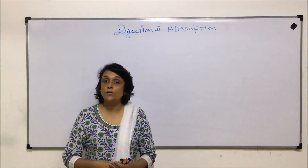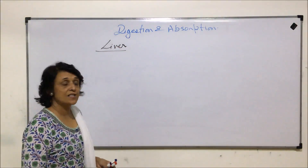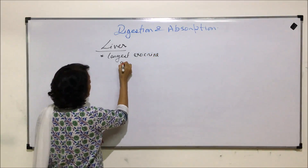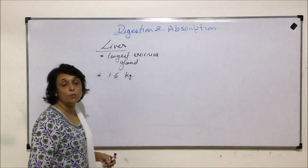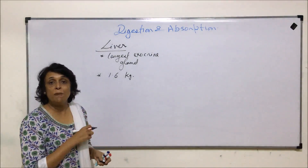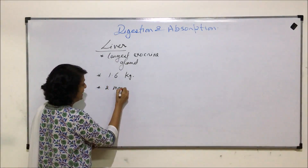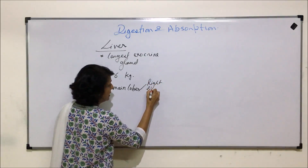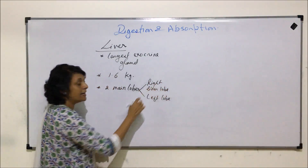In this section we'll talk about the structure of liver. Liver is the largest exocrine gland and it weighs about 1.6 kg in a normal healthy adult human being. There are four lobes — two main lobes and two smaller lobes. The two main lobes are called the right lobe and the left lobe; the right one is bigger and the left one is smaller.